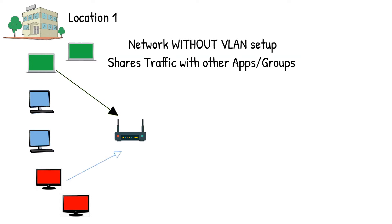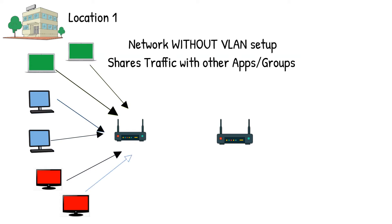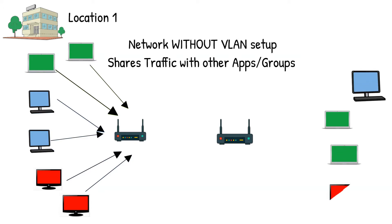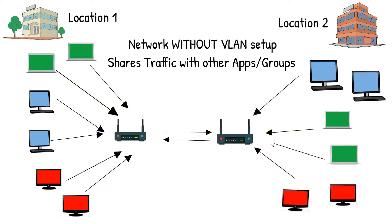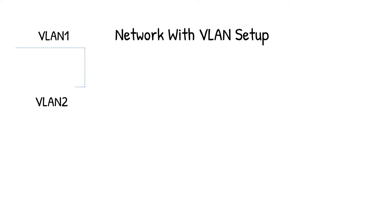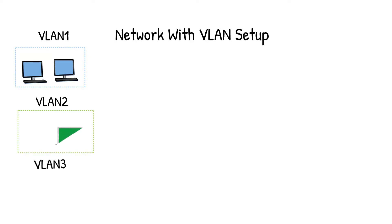VLAN can be configured through software instead of physically relocating devices or connections. VLAN wraps devices in a virtual domain, meaning that even if the physical locations of these devices are in different locations, they will not be affected. Because VLAN wraps devices in a virtual domain, these devices will appear to be part of a single domain even if they are not in the same physical location.